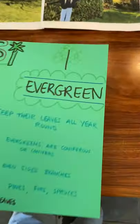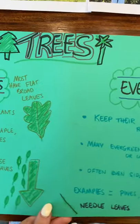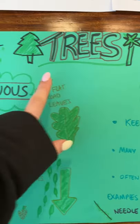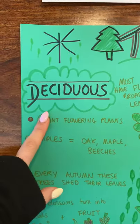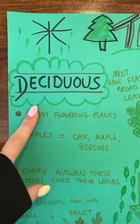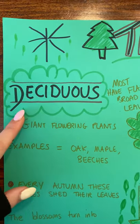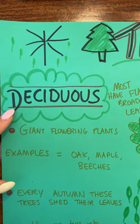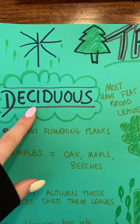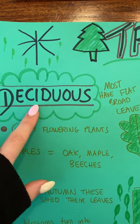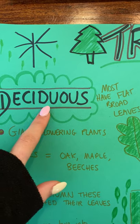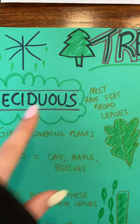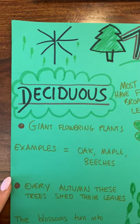Now there are two types of trees we're going to learn about today. Number one, deciduous trees. Deciduous. D-e-c-i-d-u-o-u-s. Deciduous.